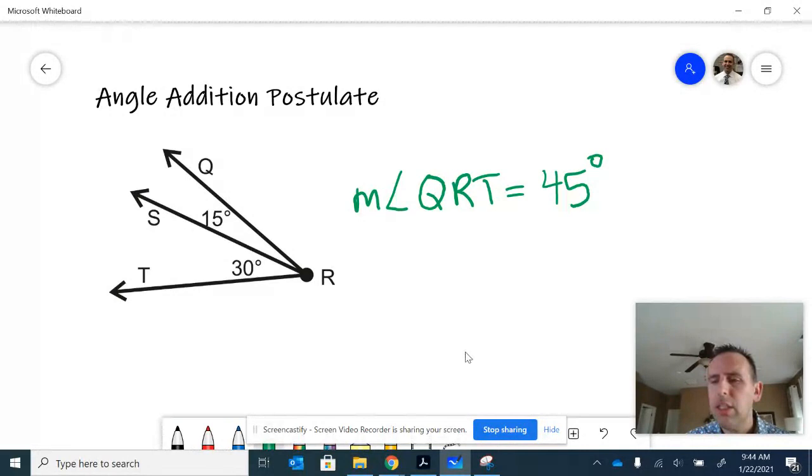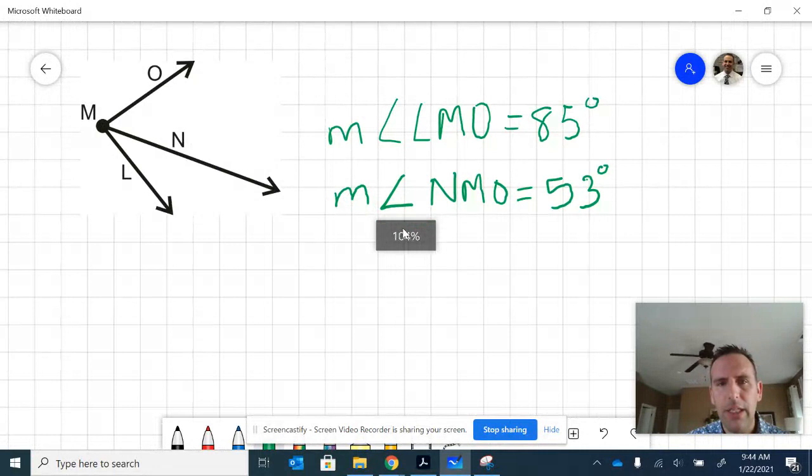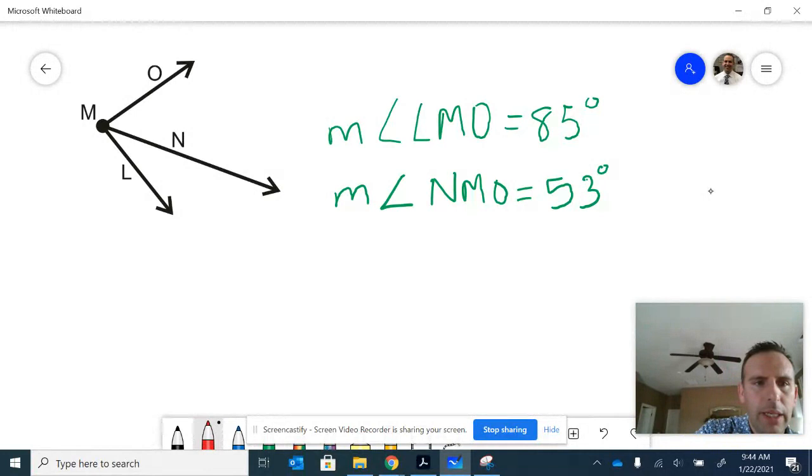Let's take a look at how we can apply that in some other examples. Down below here I have an example where we have two adjacent angles. Notice that the measure of angle LMO—that's this largest angle—is 85 degrees. And then the measure of one of the angles that makes up that, NMO, is 53 degrees.